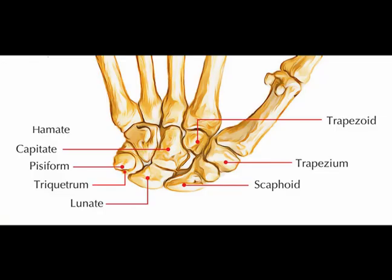Eight carpal bones exist and there are two rows of carpal bones, the proximal row and the distal row. Hello everyone and welcome to Two Minutes of Anatomy. I am Dr. Donald Ozelow of Championship Chiropractic in Las Vegas, Nevada.